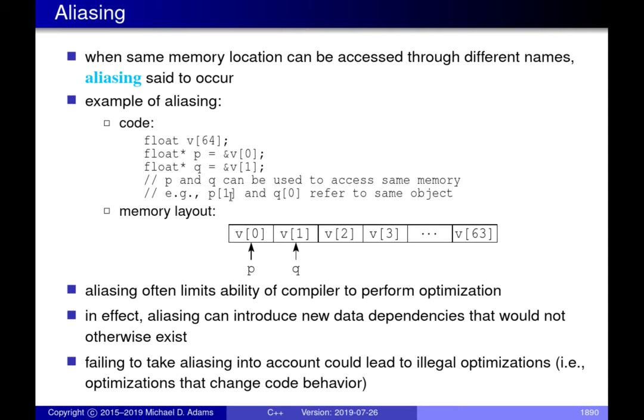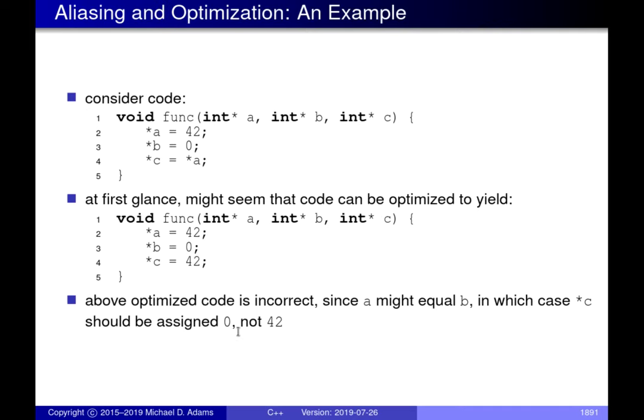This sort of thing can introduce a lot of problems for vectorization. Often you might look at your code after the fact asking why the compiler didn't vectorize it, and a common cause is overlooking the fact that aliasing could happen. If aliasing can occur, the compiler can't determine that vectorization is safe, or it may determine it wouldn't be a profitable optimization, so it simply omits it.